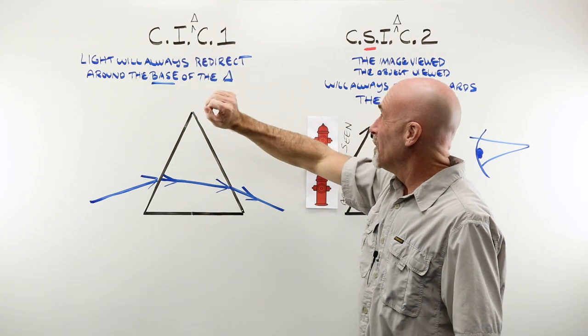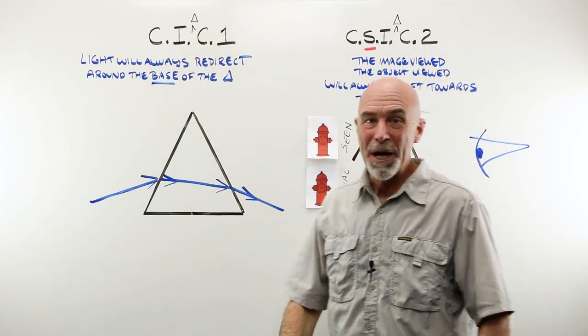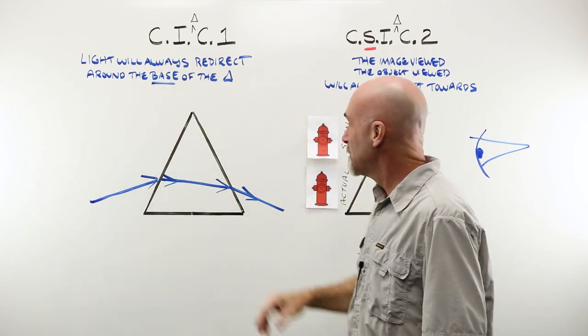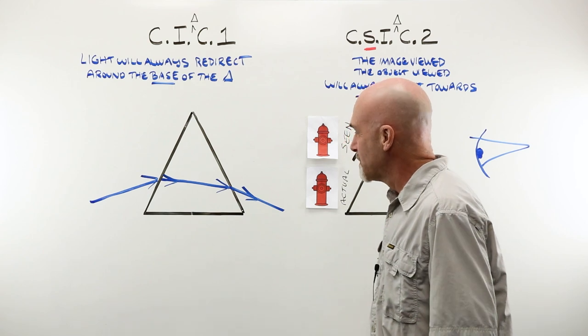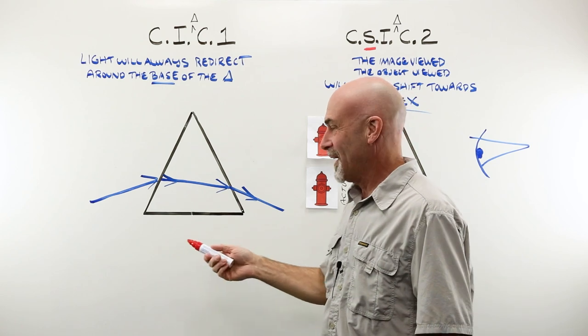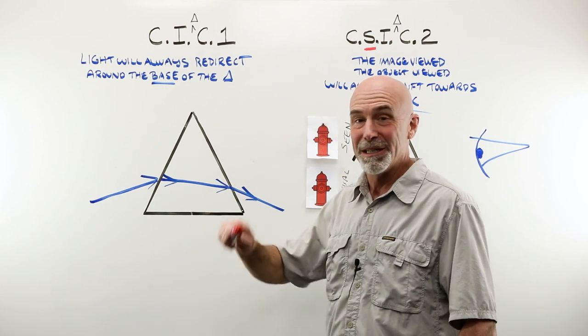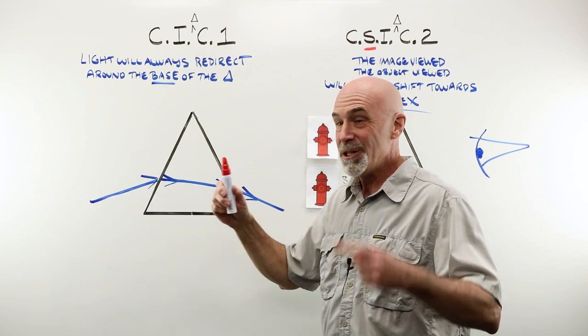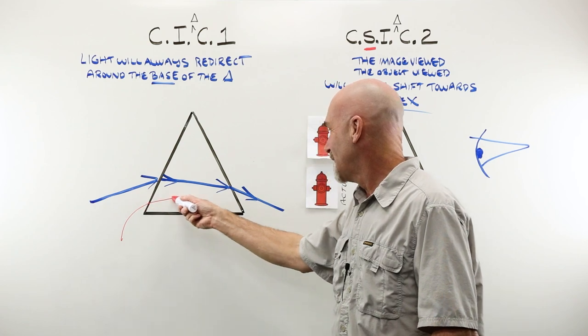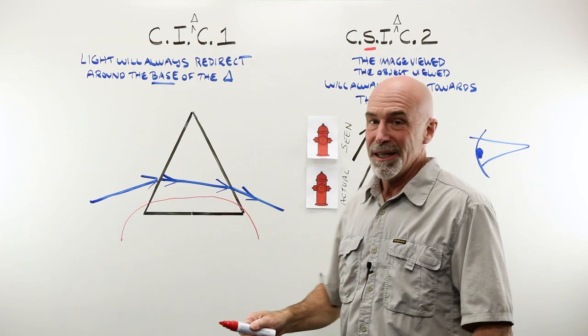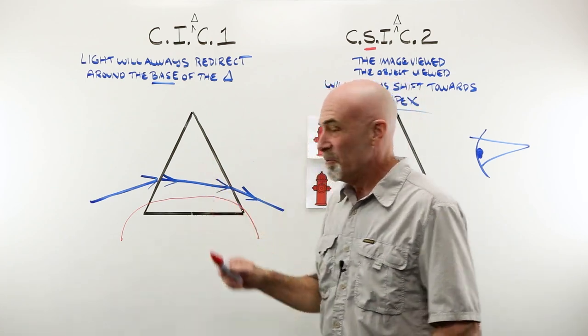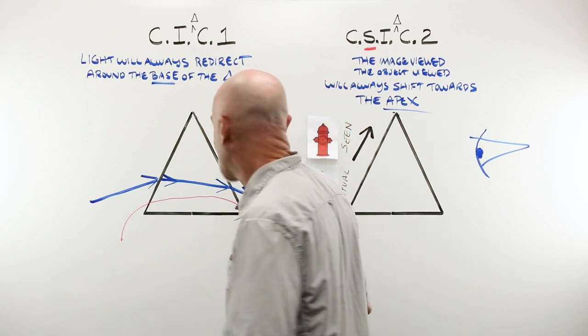Crazy important prism concept number one. Light will always redirect around the base of the prism. I said I would not use the word bend, and light does not bend, light does not curve, but in your head, it is not a bad thing to think of it in that way. This will never let you down, and will make a little bit more sense when we put these two prisms together in the next section.